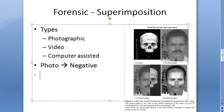A negative of the skull is also prepared. Then the appropriate magnification is achieved, and you try to align the two to maximum alignment. You have to check several anatomical measurements to confirm correspondence.